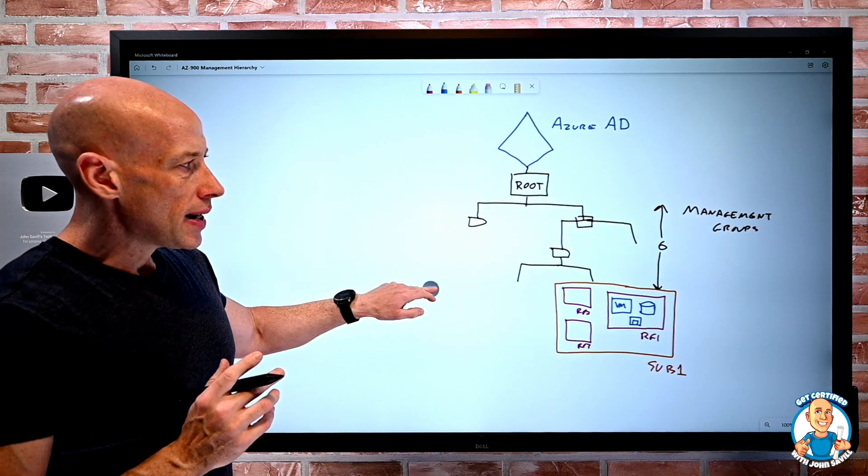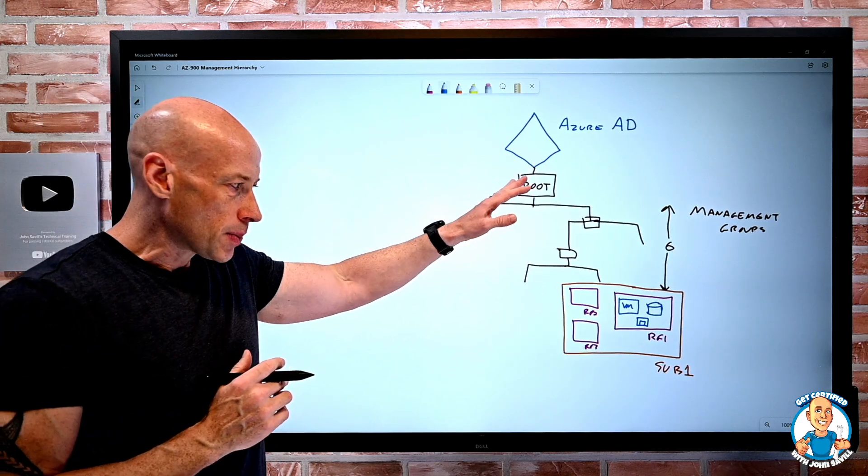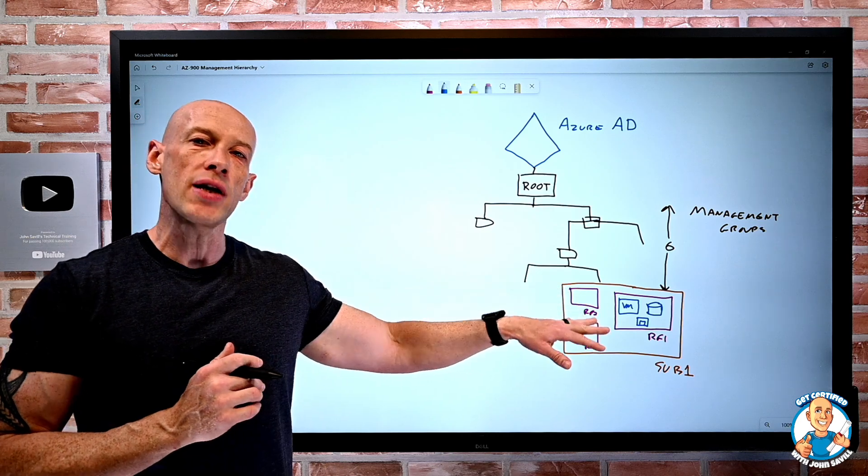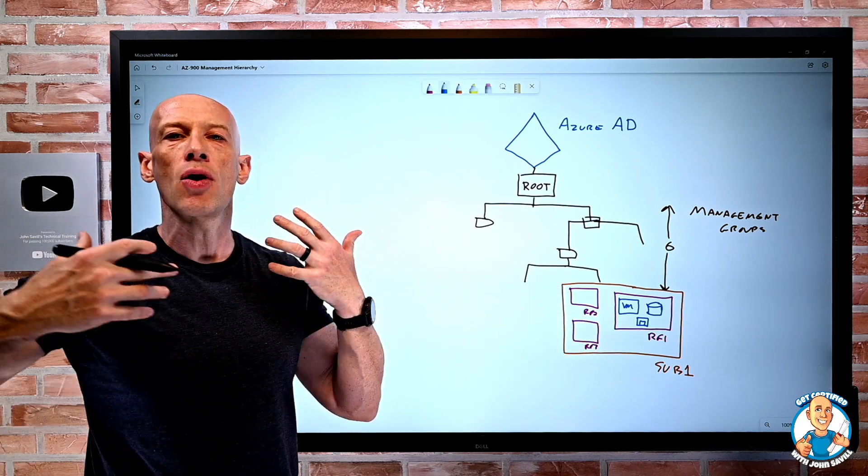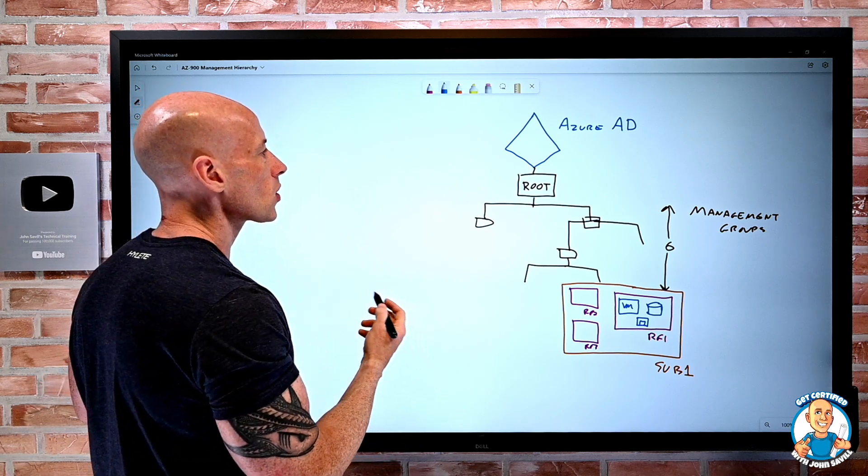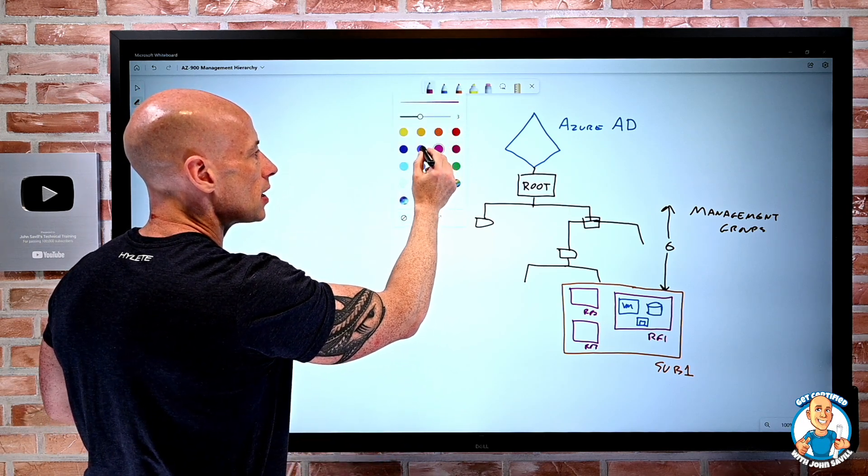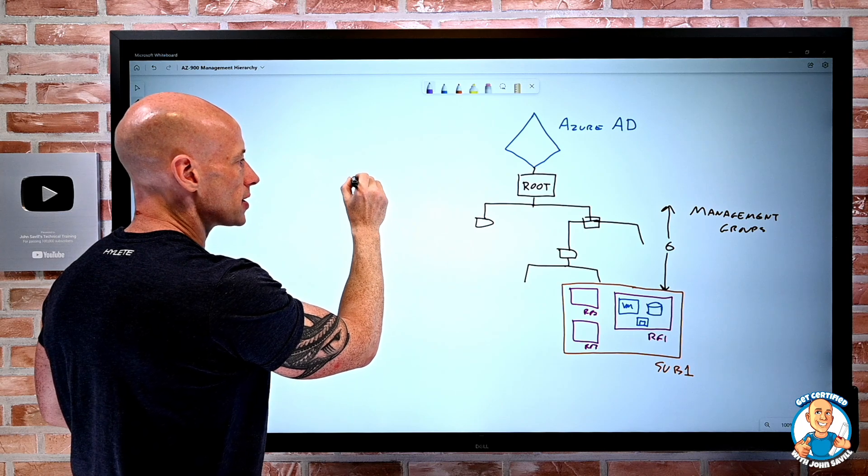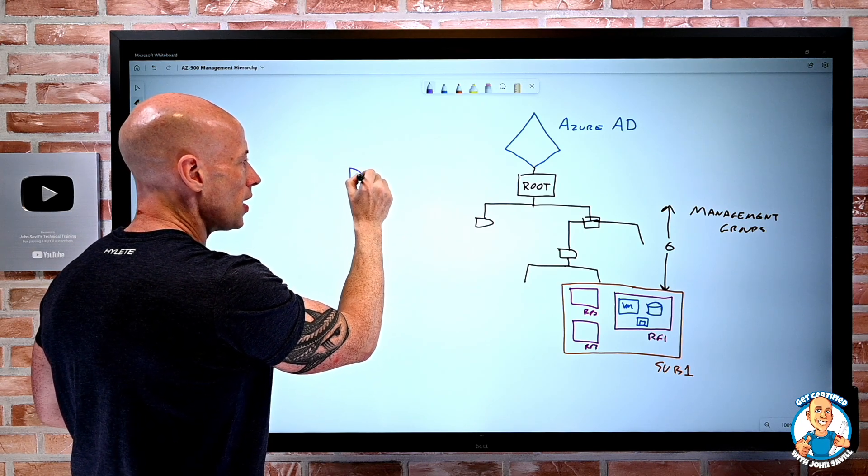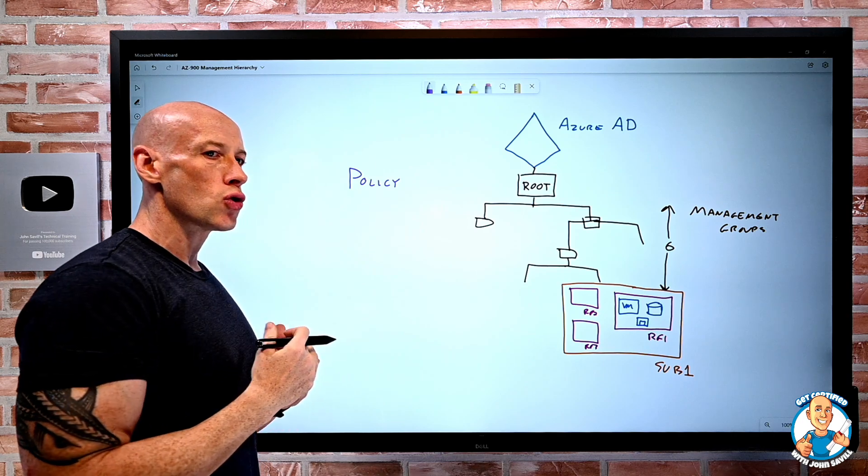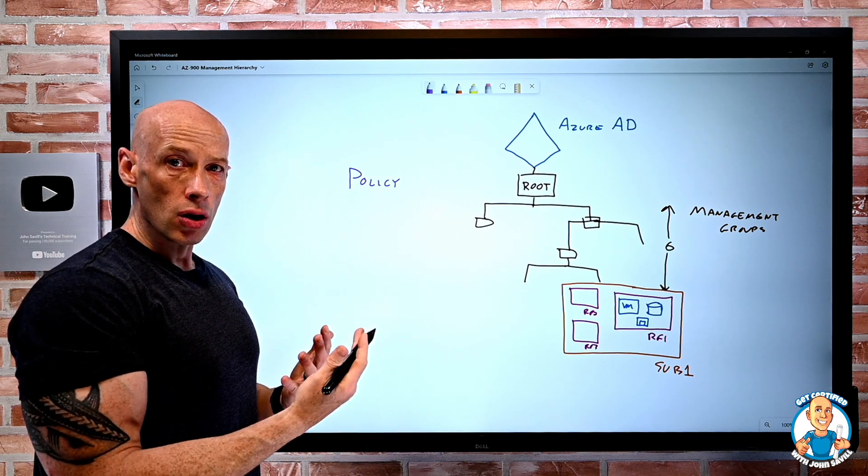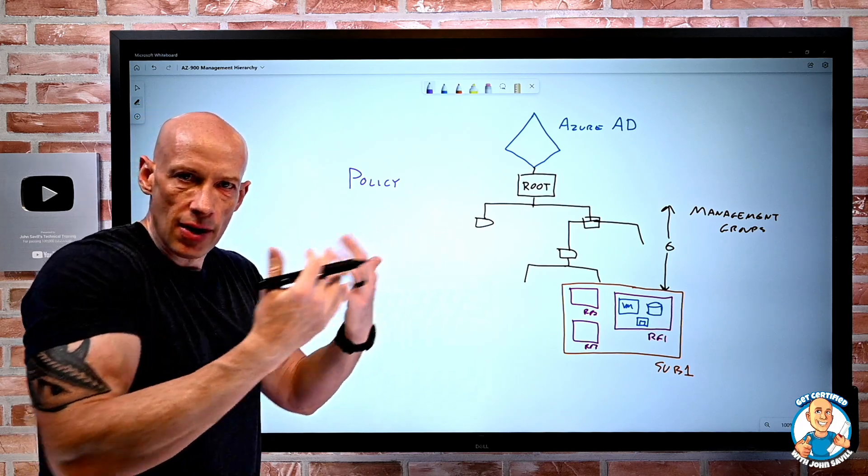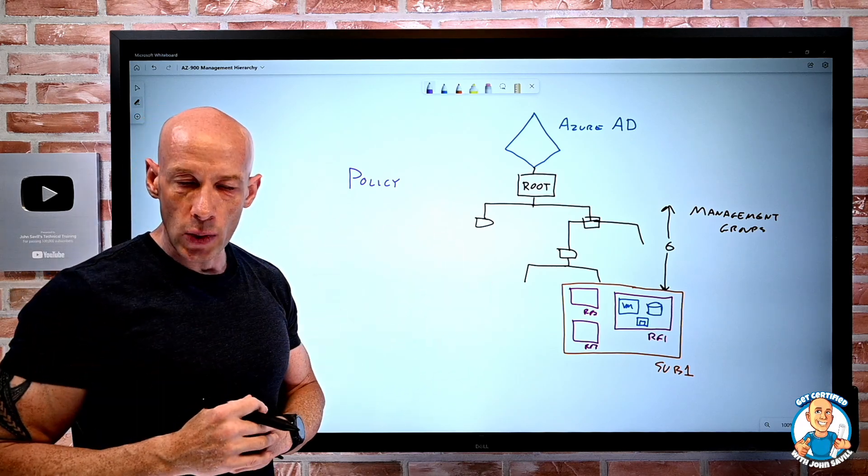And the key point in what we can do with these management groups, subscriptions, and resource groups is really about three key types of management and governance. So the first one we're really going to focus on is policy. With policy, it's the ability to create those guardrails. Now those guardrails can be used to block, stop something if it goes against the rules we define.